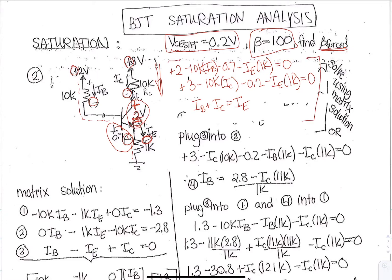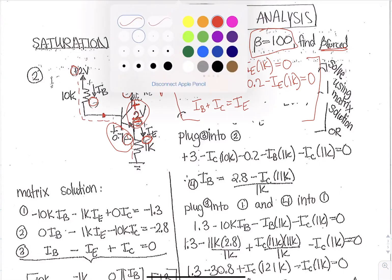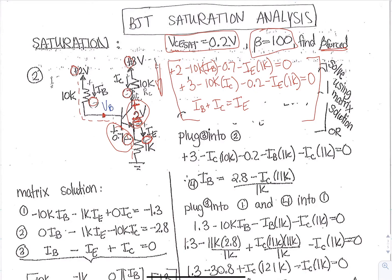So these are our set of equations. Note that you can also do node voltage here if you want to use the node voltage variables instead. For example, I could set this as VB and use that node for my currents out of that node. So here I would have VB minus 2 over 10k plus here it would be VB and then I would do a minus 0.7 over 1k. And that would be equal to 0.